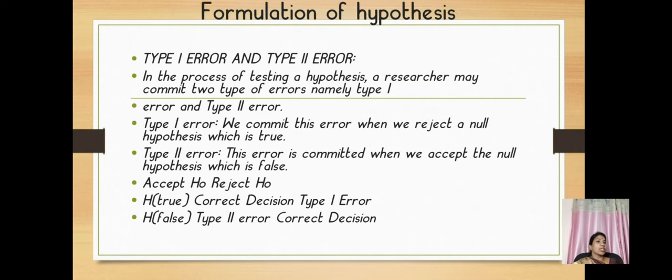Formulation of hypothesis. We should know how the hypothesis should be framed. We have Type 1 error and Type 2 error. In the process of testing hypothesis, the researcher may commit two types of errors, namely Type 1 error and Type 2 error. Type 1 error: we commit this error when we reject a null hypothesis which is true. Whereas Type 2 error: this error is committed when we accept the null hypothesis which is false. See the difference: in Type 1, we reject the true hypothesis. In Type 2, we accept the false hypothesis.